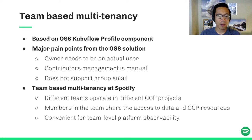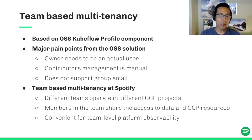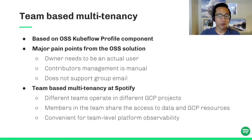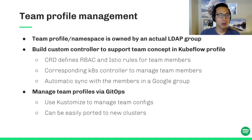At Spotify, each ML team operates in its own GCP project, and members in the team share the same access to the data and resources in that project. We need a team-based multi-tenancy support in our Kubeflow cluster so that everyone in the team can have access as soon as the namespace is created. With this setup, we can also conveniently obtain insights regarding team-level operational metrics and resource consumption to better understand and manage our platform.